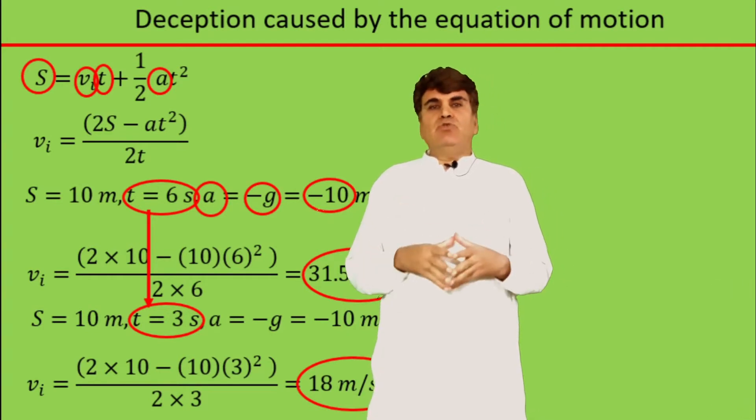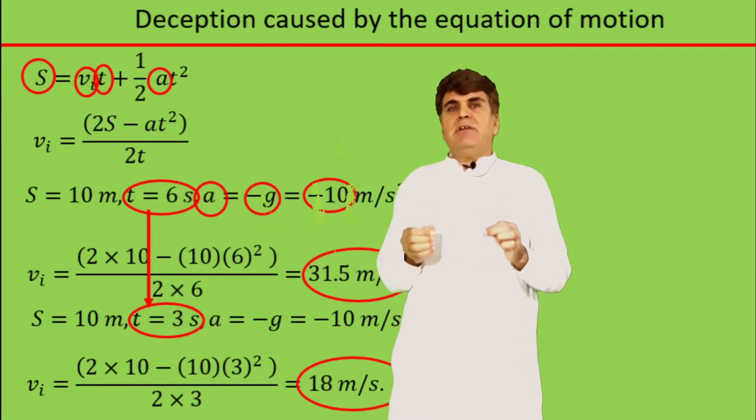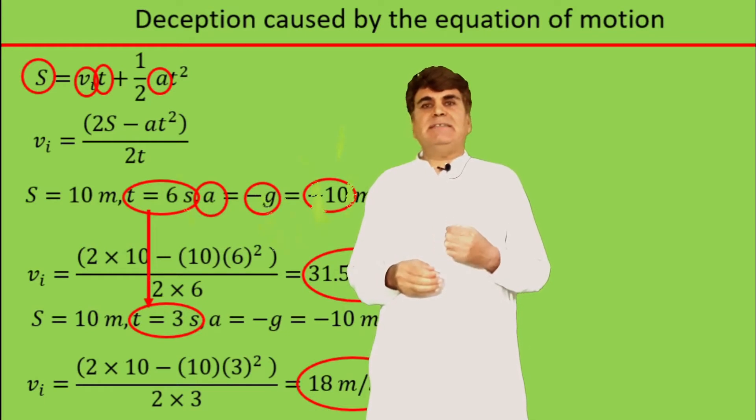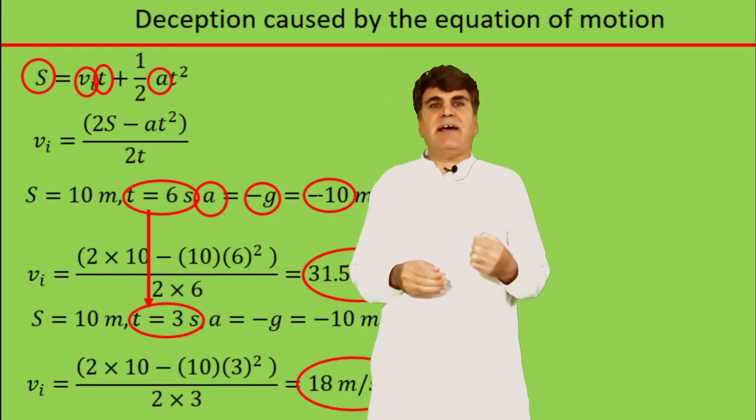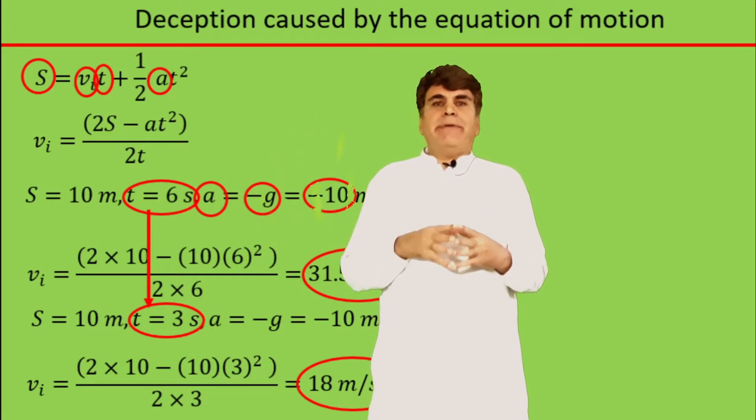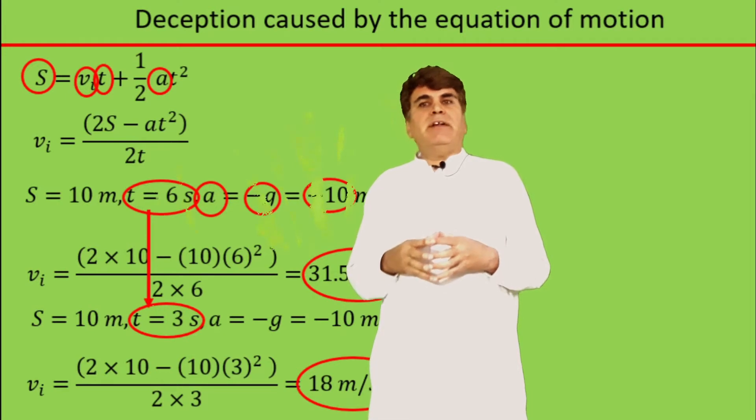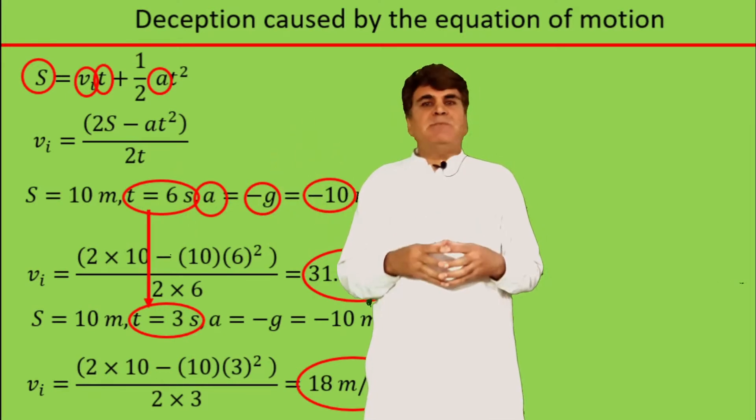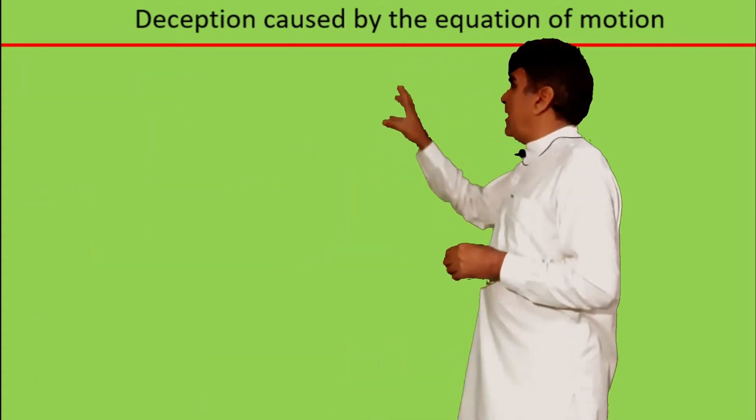In order to correctly locate the reason of this puzzle, let me reverse my calculation. That is, let me use these two values of the initial velocities and calculate the corresponding time in each case. Since the equation is quadratic in time, therefore using the solution to quadratic equations, the result for time can be expressed in the form of this equation.